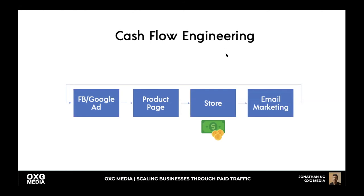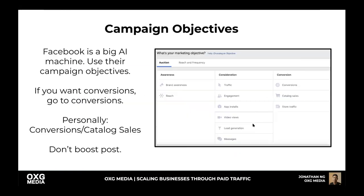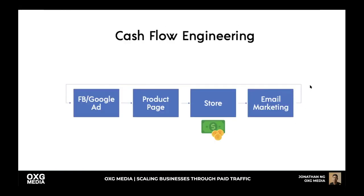This is called cash flow engineering — it's an infinite cycle. You buy traffic, get customers, they give you money, and then you can keep advertising to them for free via email — pure profit. On the left side you break even or hit 2x ROAS on cold traffic, and the email side becomes pure profit long term. For an e-commerce business, the top priority should be collecting emails. You can also create lookalike audiences from your email list.